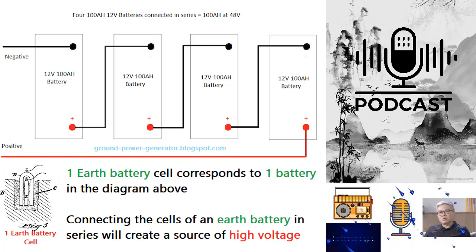Thus, achieving a high-capacity earth battery necessitates the creation of multiple earth battery cells. These cells can be connected in parallel to increase overall capacity, ensuring that the battery can deliver sufficient power for connected devices to function efficiently.